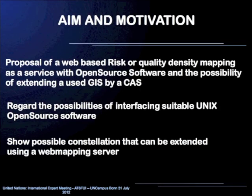The aim of this talk is to demonstrate exemplary possibilities of extending open source based spatial analysis chains with suitable components providing additional capabilities and interfacing them with an adapted web interface. I will give you a proposal of web-based risk or quality density mapping as a service with open source software, and the possibility of extending a used GIS — a geographical information system — by a computer algebra system, a mathematical software that provides symbolic calculations.